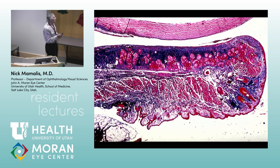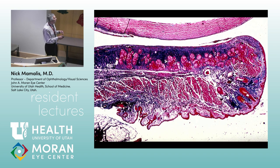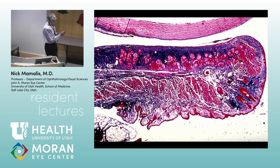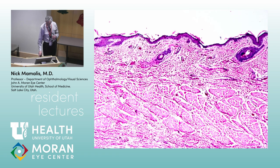Trichrome is an interesting stain. We use it for corneal stromal dystrophies. It stains epithelial tissue red or pink, and also muscle tissue. It stains connective tissue blue. So here is the surface epithelium, here is the orbicularis oculi muscle, here is the tarsus — connective tissue — and then lastly the palpebral conjunctiva and the cornea underlying it.